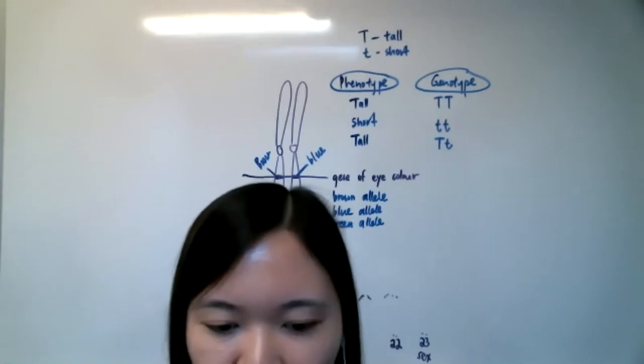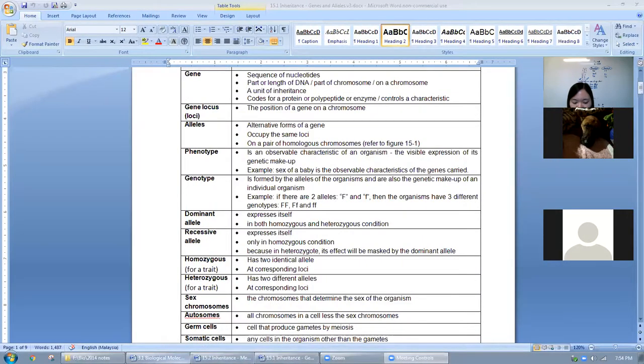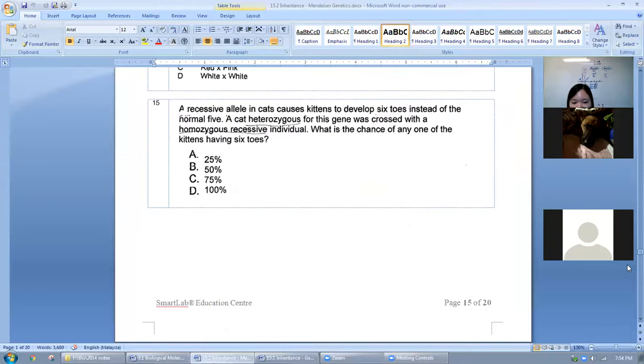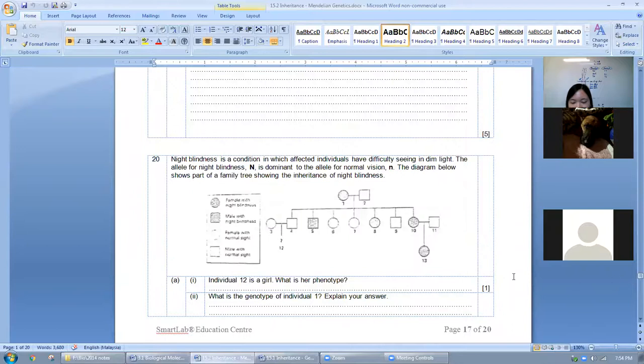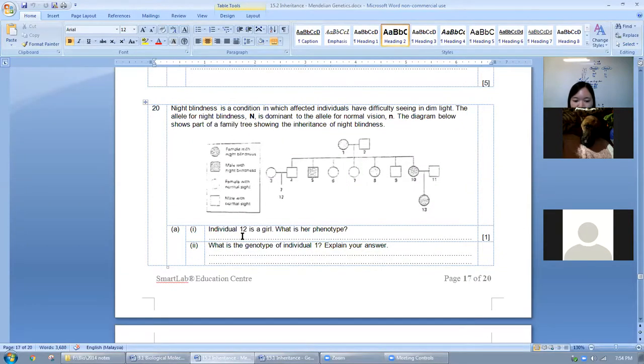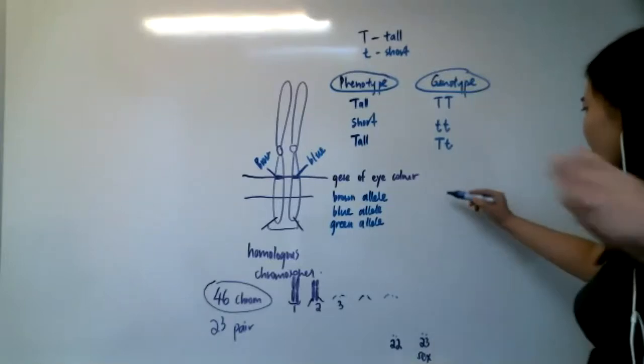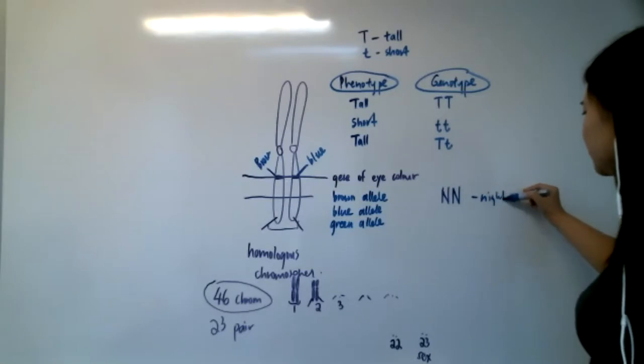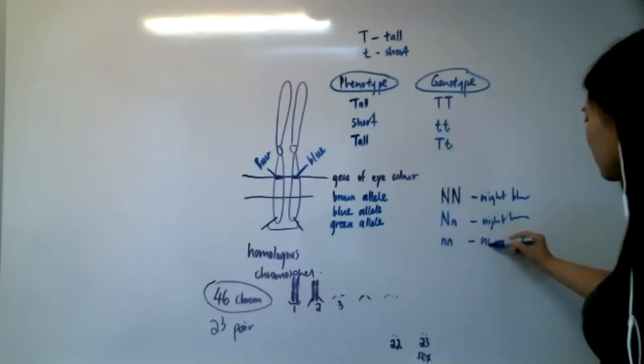Question 20. Now I'll share screen first. So individual 12 is a girl - what is her phenotype? What do you think is a phenotype? Okay, so basically what happened here is - they were saying that night blindness N is the dominant allele. If you have NN like this, you have night blindness. If you have Nn like this, you are also night blind. Only when you have nn like this, you are normal.